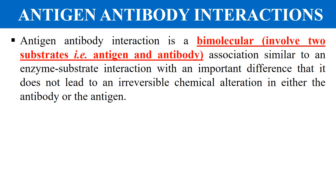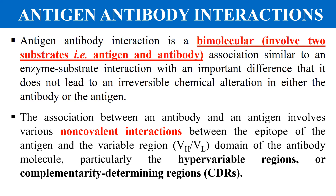These antigen-antibody interactions are generally non-covalent in nature, and they occur between the epitope of the antigen and the variable region of the antibody. The epitope is the portion of the antigen which interacts with the antibody, while the variable regions include the variable region of the light chain and the variable region of the heavy chain. Specifically, the hypervariable regions — or CDRs (complementarity determining regions) — interact with the epitope.